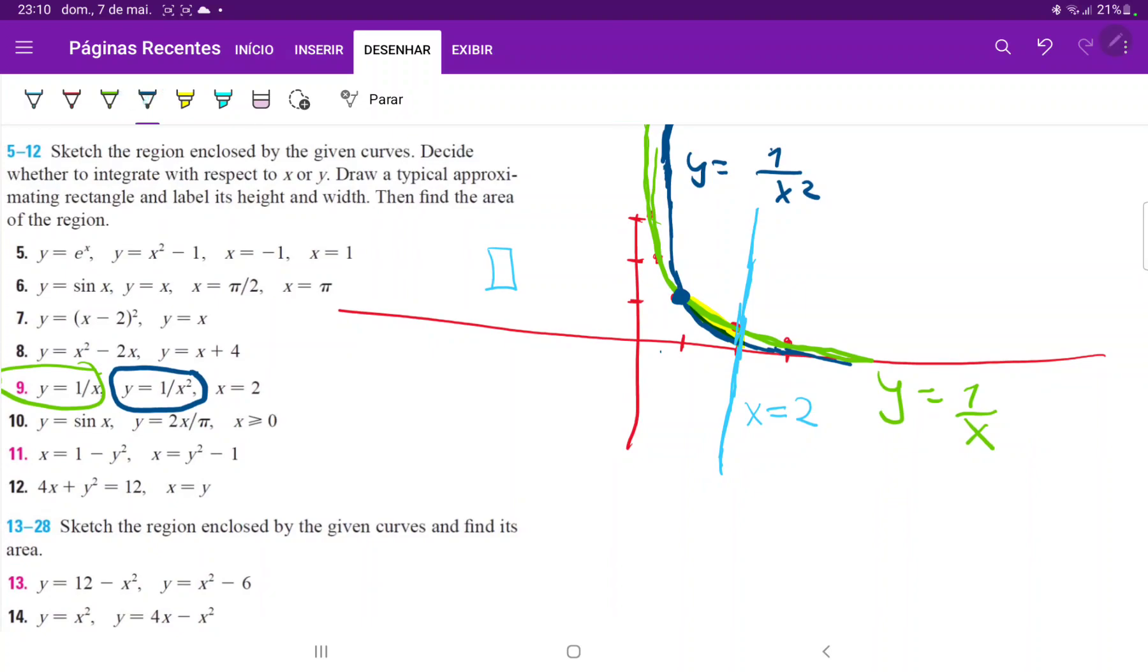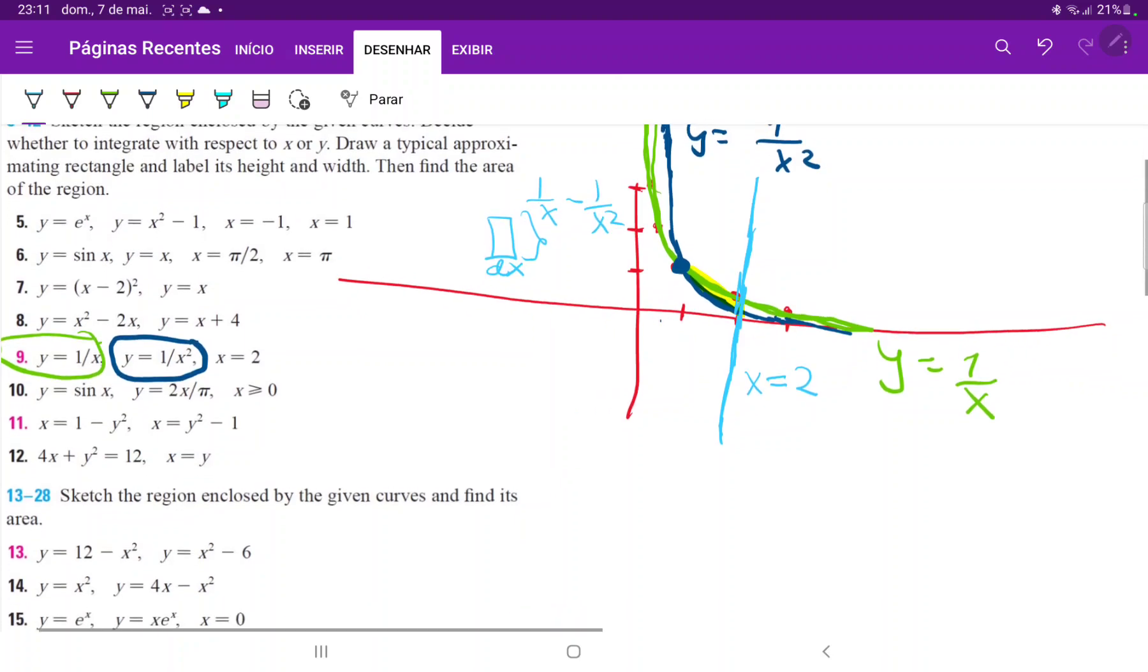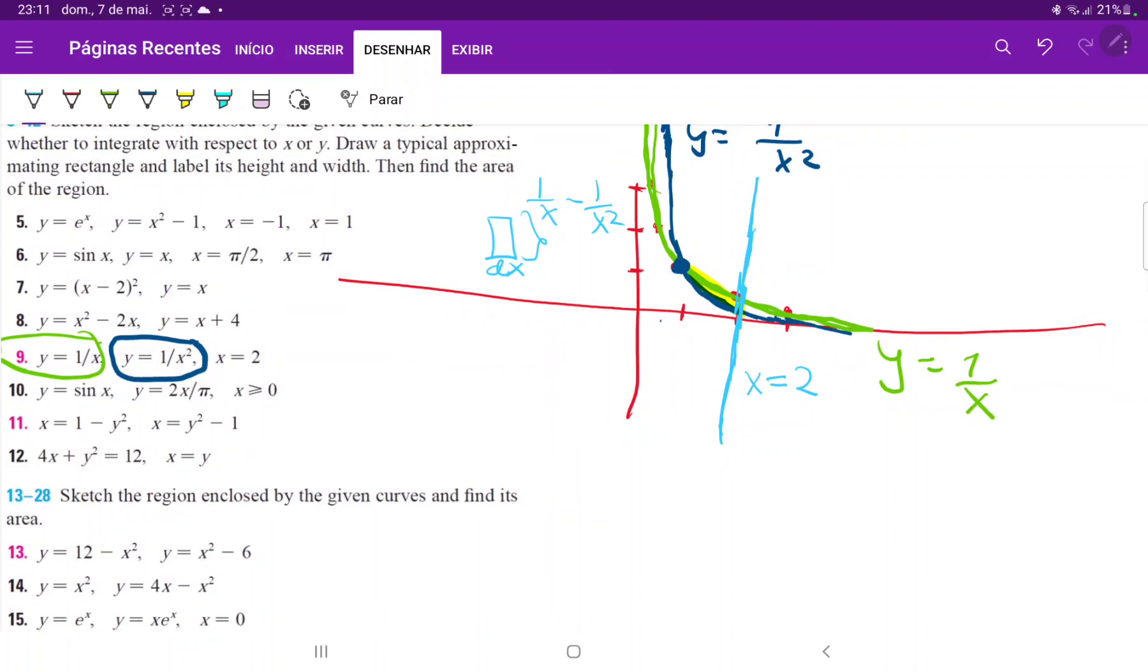So we will choose vertical rectangles, which does mean that we're integrating with respect to x. And it means that we're integrating with respect to x precisely because our base here is dx. So we do need to look at the boundaries of integration. When we were drawing, we saw that they both touch the point (1,1). So that's one of the bounds, and the other bound is given by this line x equals 2.